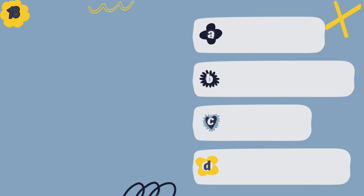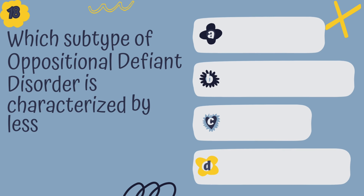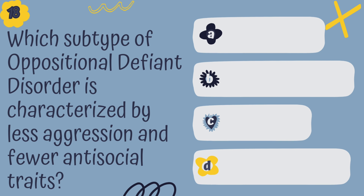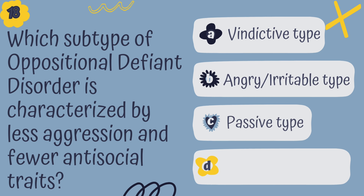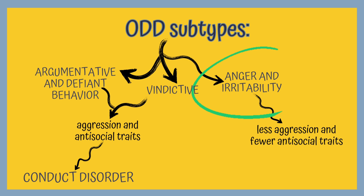Question 18. Which subtype of oppositional defiant disorder is characterized by less aggression and fewer antisocial traits? A. Vindictive type, B. Angry irritable type, C. Passive type, or D. The non-compliant type? The correct answer is B, the angry irritable type.